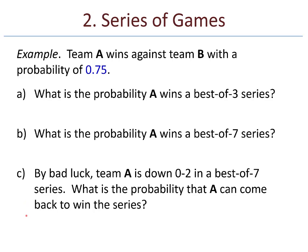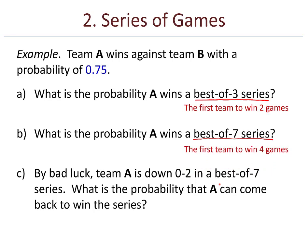A quick note about series: when I say best-of-three, it means the first team to win more than half the games — another way of thinking about it is the first team to win two games. Likewise, a best-of-seven series means the first team to win four games. In general, it's the first team to win more than half of the games. Let's take a look at problem A.